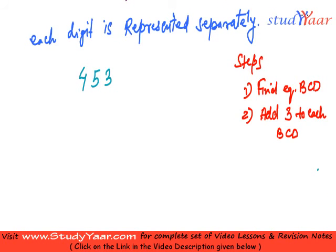So my step 1 is, let me write 453. The equivalent BCD is: for 4 it's 0100, for 5 it's 0101, for 3 it's 0011. So up till this, I have got my BCD.